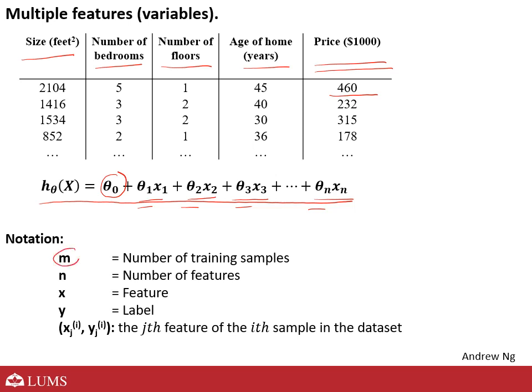Let's talk about some notation. m is the same as before — number of training samples. n is the new thing — number of features. You can see that the whole equation now goes up to theta_n times x_n. In this case, n is equal to four, so we have four features. Your x is your feature and your y is your label. The superscript i indicates the sample number — for example, i=1, i=2, i=3, i=4. The subscript j indicates the feature number.